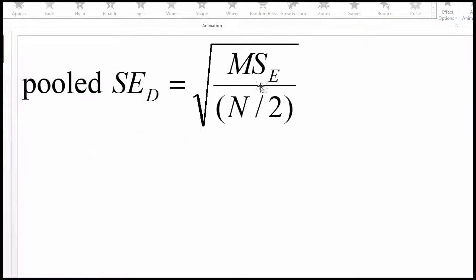So that is the use of this pooled standard error of the difference in related means formula that I have in the textbook.